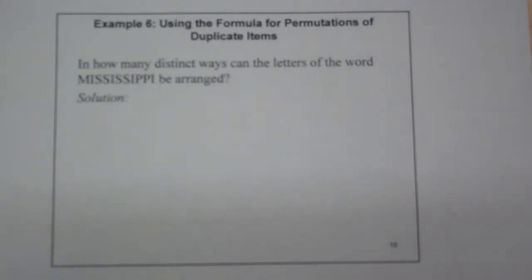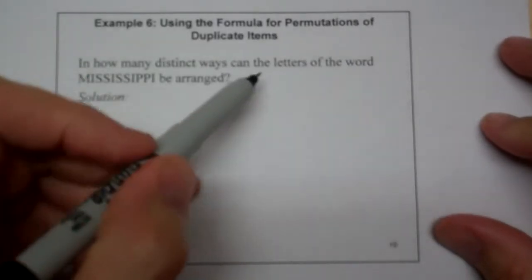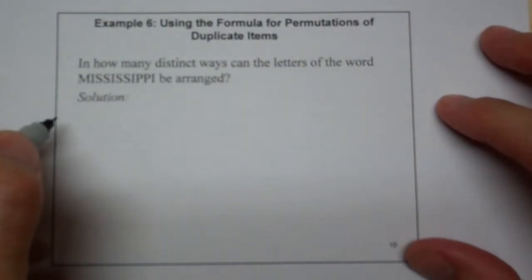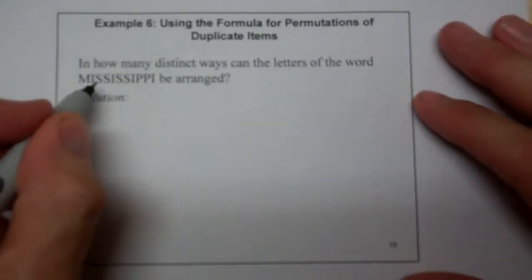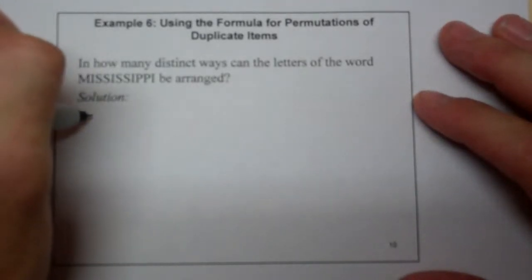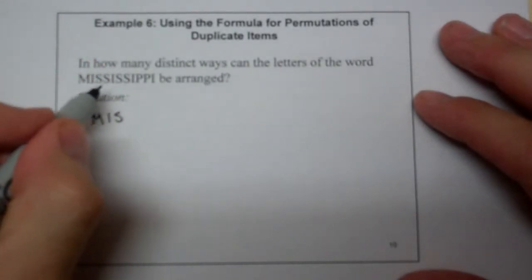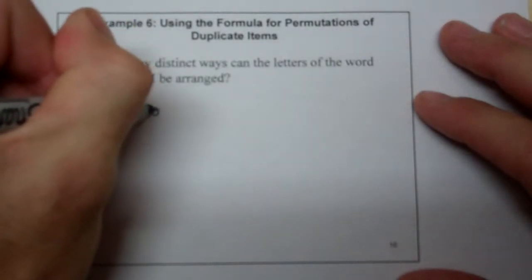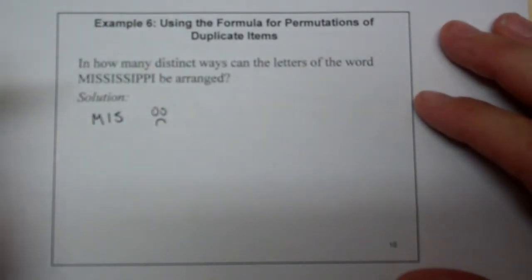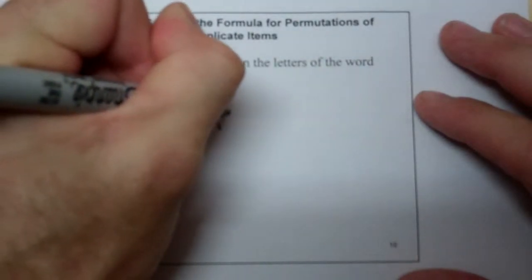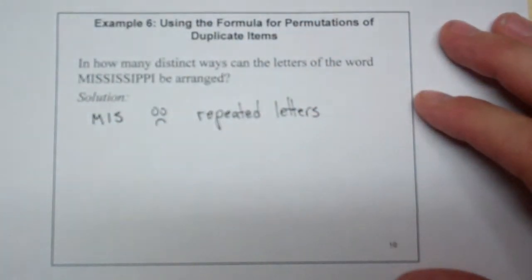Now, what happens if I have something a little bit different? What if I have to figure out how many distinct ways I can write the letters of the word Mississippi? And I go, well, wait a minute. This S and this S are the same. So if I start going M-I-S, is that the third letter or the fourth letter? Does it make a difference? And I'm thinking, oh, now I'm sad because I have these repeated letters.